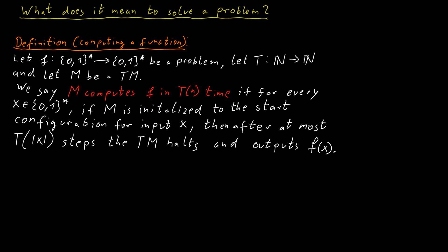And the number of steps that the Turing machine runs is specified by this function. So this function t gives you an upper bound on the number of steps that the Turing machine performs.